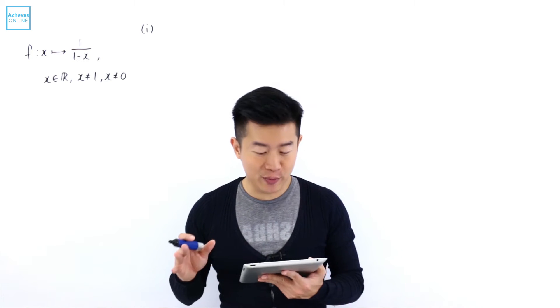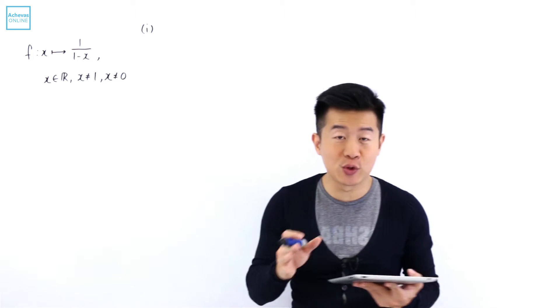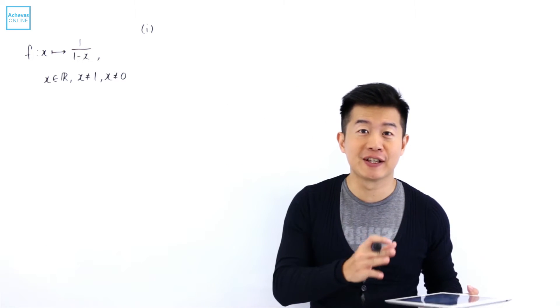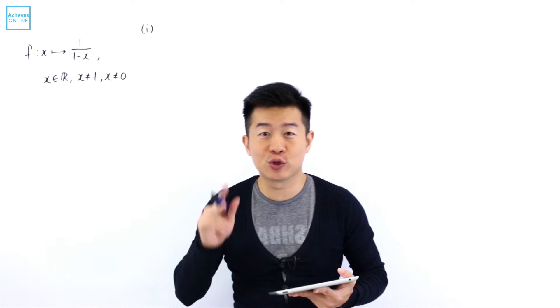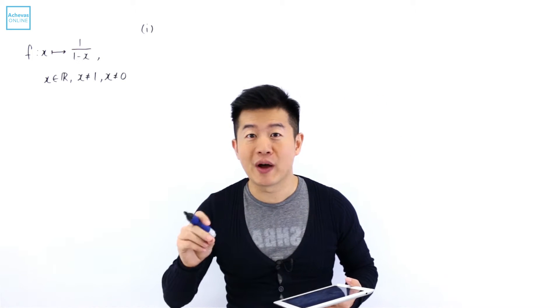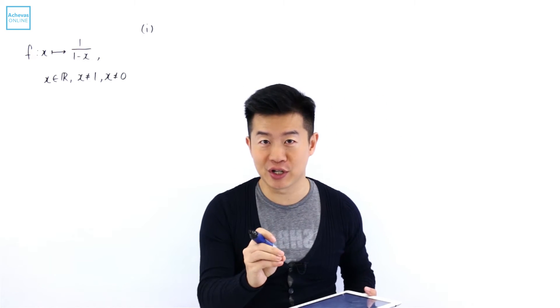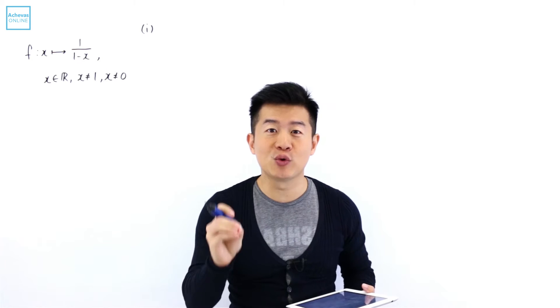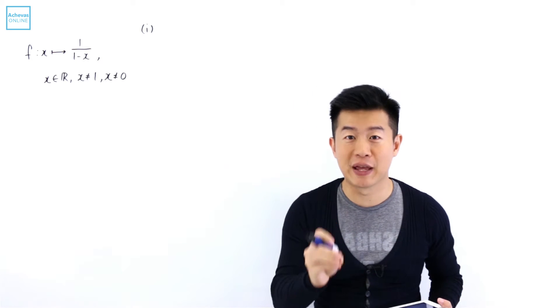In this part of the question, we are supposed to show that f²(x) is equal to f⁻¹(x), which means that we need to show two things. Number one, they must share the same expression. And number two, they must have the same domain.